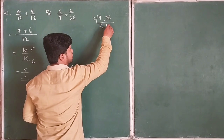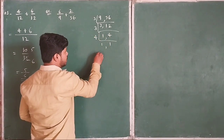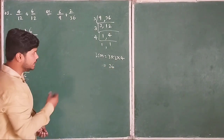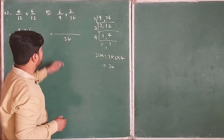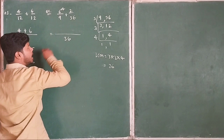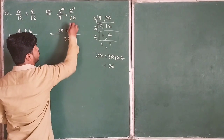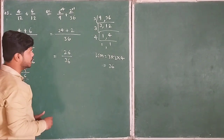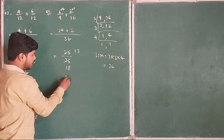We calculate: 3×3=9, 3×4=12, 4×1=4, so LCM of 9 and 36 is 3×3×4=36. We write 36 as the common denominator. For the first fraction, 36÷9=4, so we multiply the numerator 6 by 4 to get 24. For the second fraction, 36÷36=1, so we multiply the numerator 2 by 1 to get 2. That gives 24 plus 2 = 26/36. Simplifying by dividing by 2: 13/18. The correct answer is 13/18.